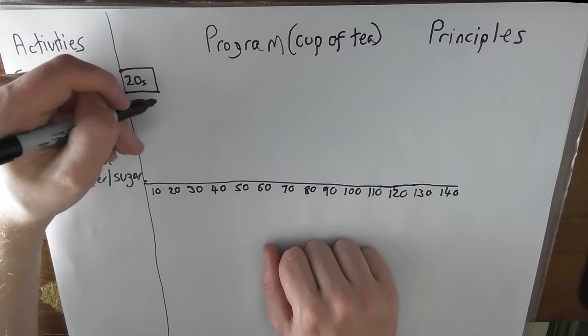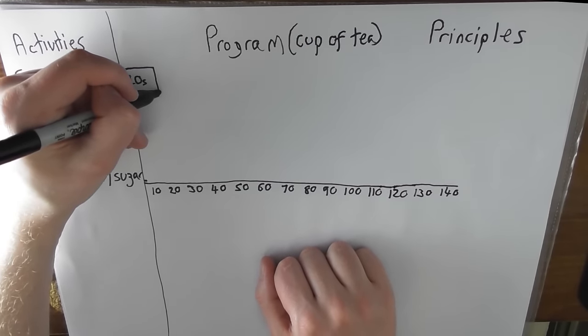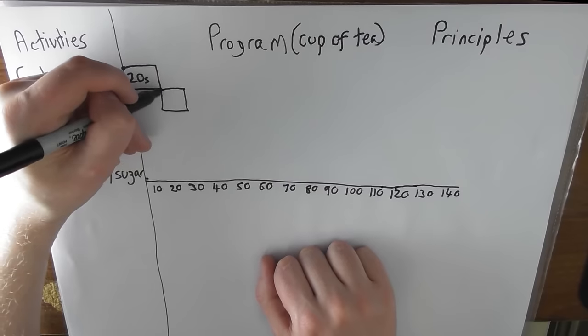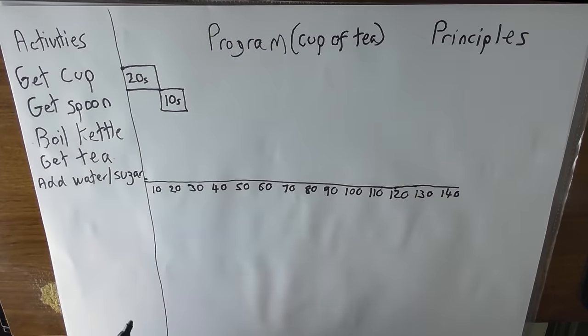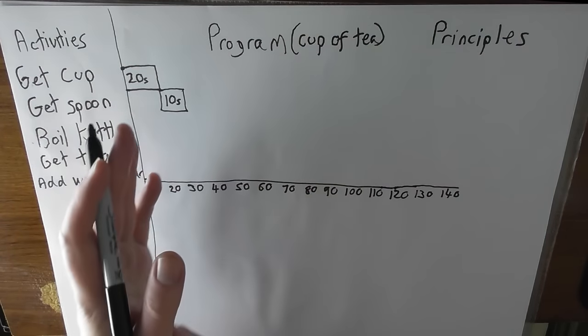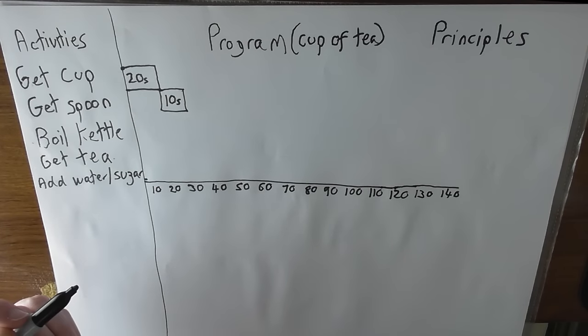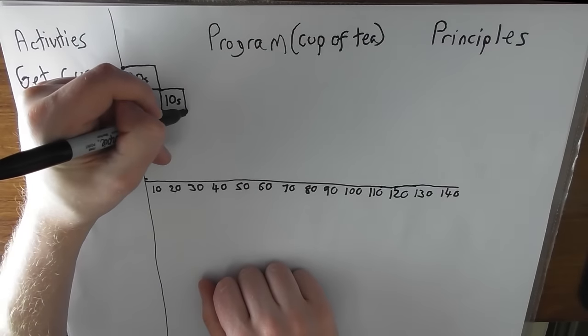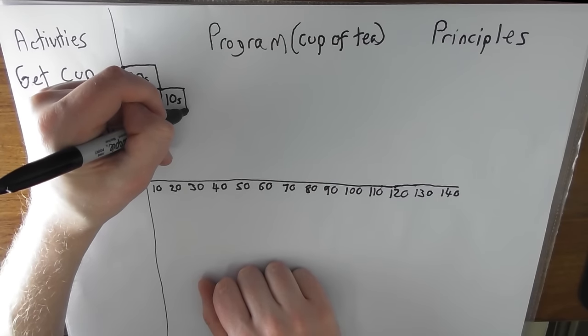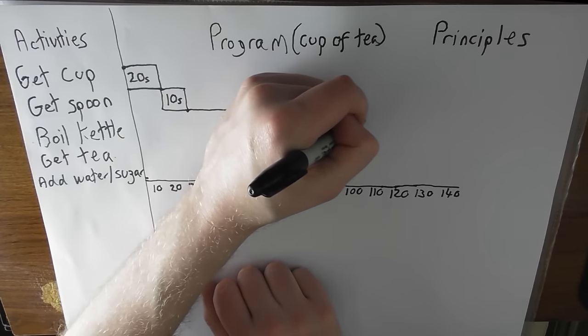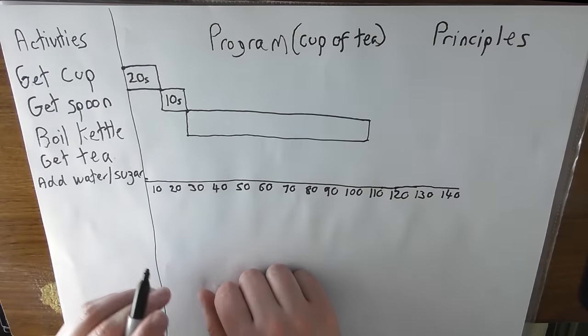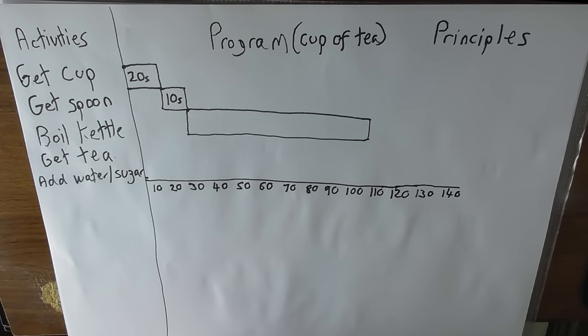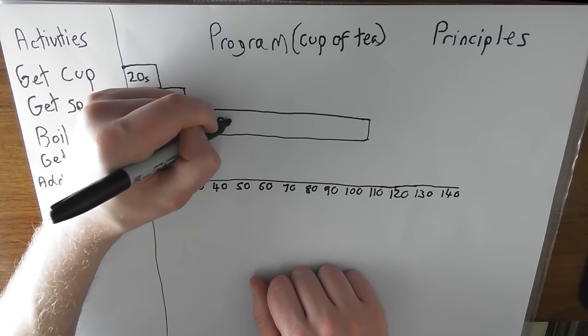After we've got the cup, we'll get the spoon. Maybe because we're already in the kitchen, it only takes 10 seconds. So, we go from 20 to 30. I appreciate the 10 second box is not a bit bigger than half the 20 seconds, but the size of the bar is really as important as what the duration is. So, we're 30 seconds into our schedule, and now we're going to boil the kettle. Maybe boiling the kettle takes, I don't know, a minute and 10, so 70 seconds. So, that's like 100, right? See my math there? Incredible. So, we've got our 70 seconds.